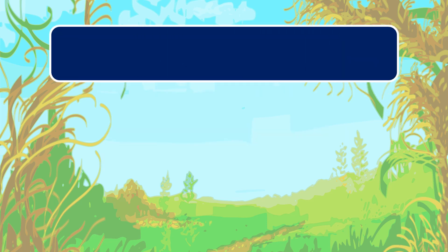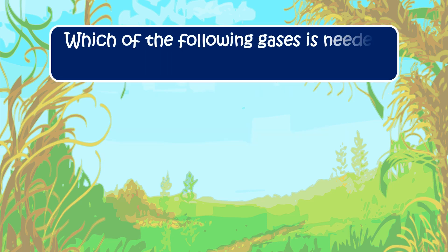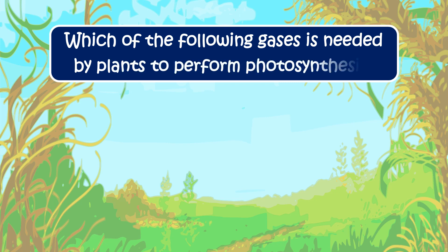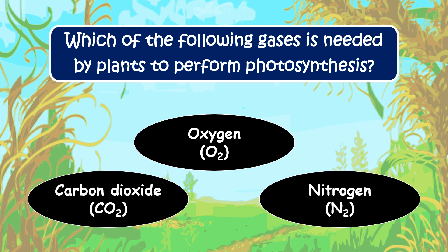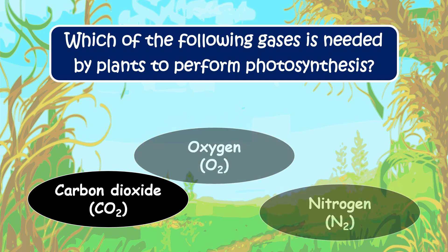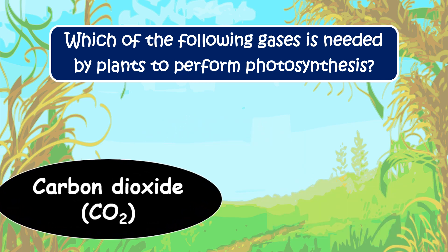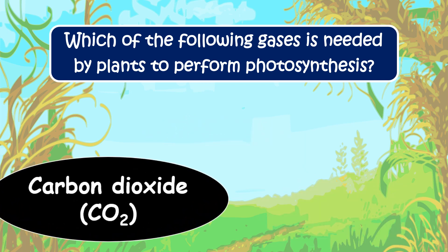Which of the following gases is needed by plants to perform photosynthesis? The options are oxygen, carbon dioxide, or nitrogen. The correct answer is carbon dioxide — it is the gas needed by plants to perform photosynthesis.